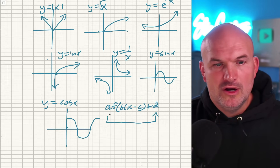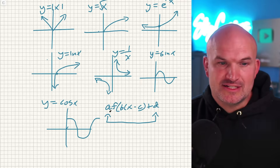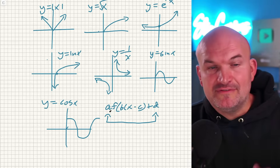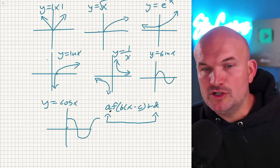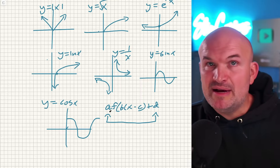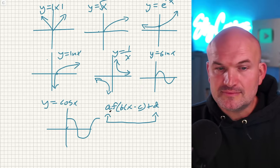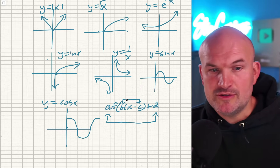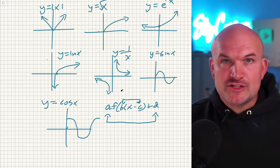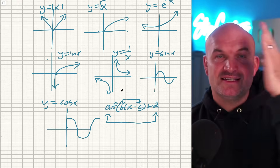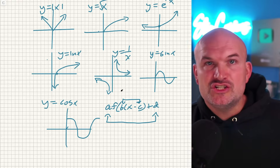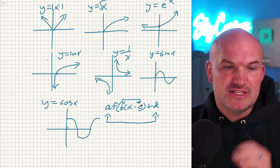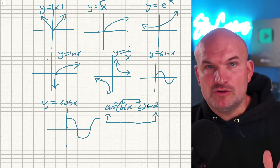A quick review: a and d are outside of the function f of x, so those are vertical transformations. A is vertically stretching or compressing the graph — it's also a reflection about the x-axis, which is vertical. D shifts your graph up or down depending on whether it's positive or negative. When you're talking about transformations inside of the function, those are horizontal transformations. B is a horizontal stretch or compression, or a reflection about the y-axis. C shifts the graph left or right — and remember, it's x minus c, so it's always in the opposite direction. Minus one would be a shift of the graph one unit to the right.